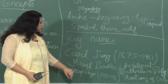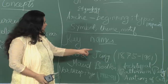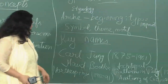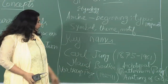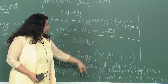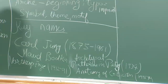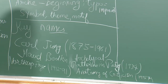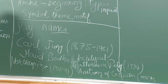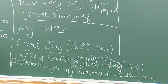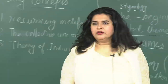Carl Jung, 1875 to 1961; Maud Bodkin, who wrote Archetypal Patterns in Poetry in 1934; and Northrop Frye, 1912 to 1991, who wrote Anatomy of Criticism in 1957. These are the key names and key books in archetypal criticism.